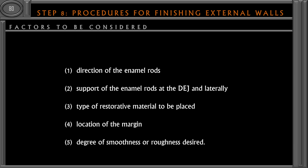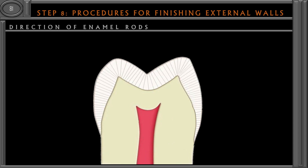The third factor is the type of restorative material: for composite, we can place a bevel in the enamel; for a cast metal restoration, a bevel must be placed throughout all external walls; for amalgam, a butt joint — a 90-degree joint — is required at all angles. The fourth factor is the location of the margin — whether on the occlusal, buccal, lingual surface, or subgingival — and the degree of smoothness or roughness required to finish the external walls.